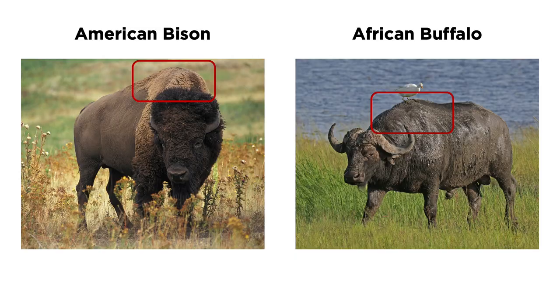Another difference is in the hump. Bison have one hump at their shoulder, while buffalo don't have one at all. The bison's hump allows them to walk and move in heavy winds and snowdrifts.